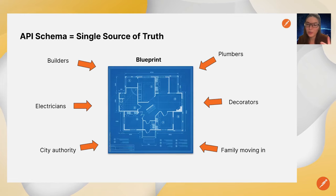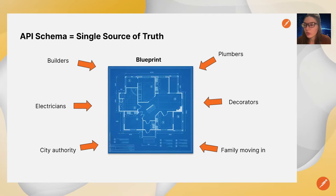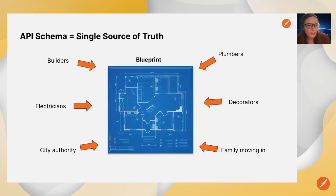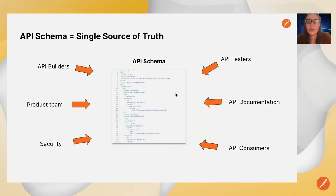Obviously the consumers are going to care about it. The testers are going to care about it. The security team might care about it. You can think of that API like a blueprint if you were building a house — the builders, carpenters, electricians, plumbers, and even the city that needs to know the house meets legal requirements for the zone. The schema really ties together all the interested parties because the schema in the API world is our blueprint.